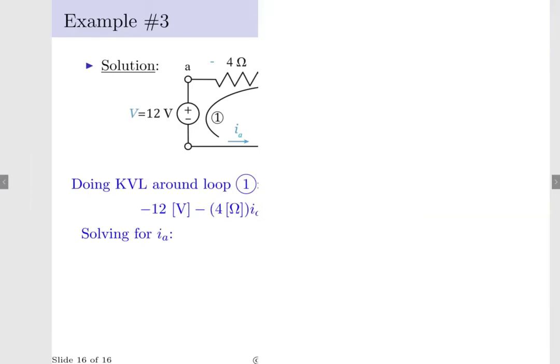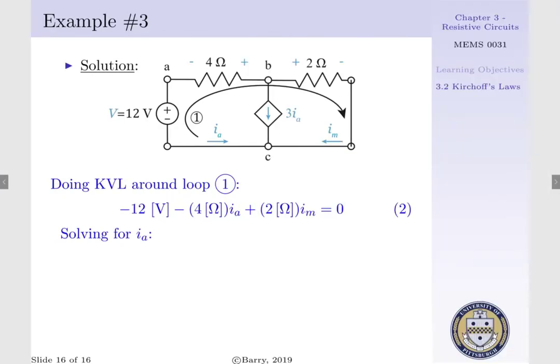If we re-express this in terms of IA, we can say IA equals IM per 2 minus 3.